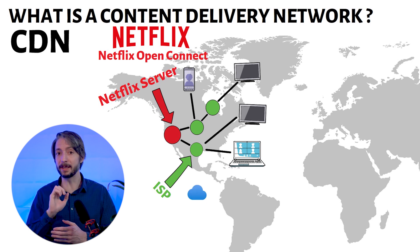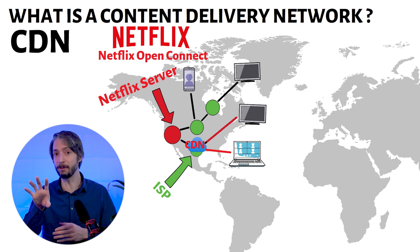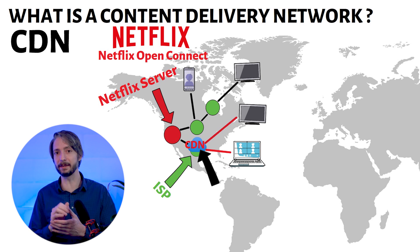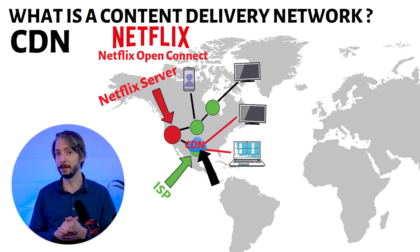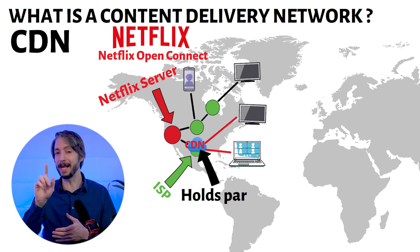Partner ISPs and other providers can install a CDN close to their end users. This CDN caches part of Netflix's library, so when a user starts streaming a video, it gets the stream from a server close by. The CDN has built-in intelligence, so it doesn't cache all of Netflix's library, but it sees which videos are being watched the most and prioritizes caching them first.